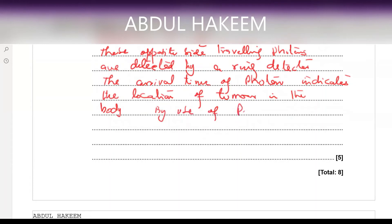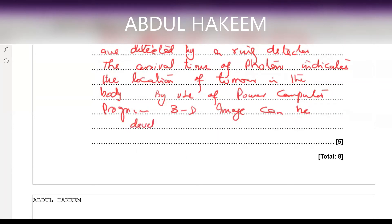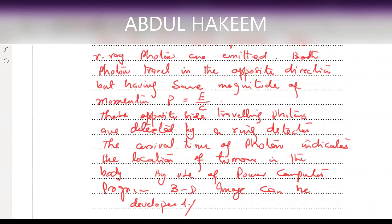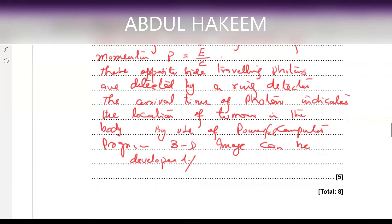Using a powerful computer program, a three-dimensional image can be constructed. To repeat the full answer: a positron source (tracer) is used; due to annihilation, two gamma ray photons are emitted traveling in opposite directions with equal magnitude of momentum (p = E/c); these are detected by the ring detector; the arrival time indicates the tumor location; and using a powerful computer program, a three-dimensional image can be constructed.